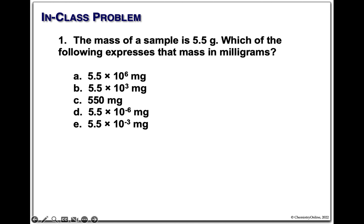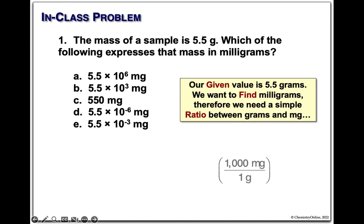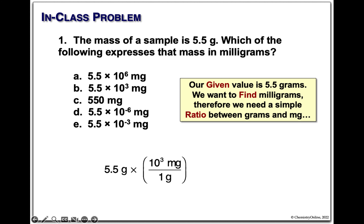Our first question: simple mass conversions. We have five and a half grams in our sample. Express that in milligrams. Our given value is five grams. We need a ratio of grams and milligrams, and our ratio of grams must be in the denominator — 1,000 milligrams in every gram. Start off with our given, insert our ratio, grams will cancel. Very simple problem: 5.5 times 10 to the third.